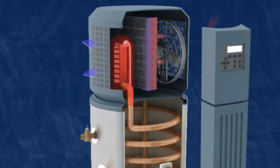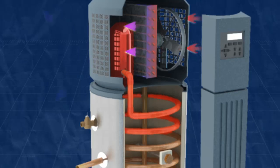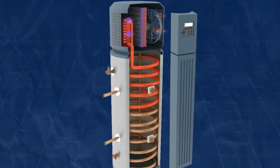The hot vapor refrigerant then flows through a copper coil in the water tank, heating the water and cooling the refrigerant.